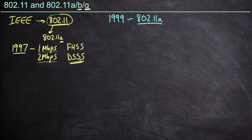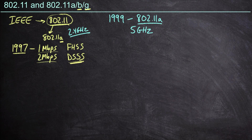802.11a was a significant step forward in technology. In fact, one might argue it was too big of a step. One of the biggest things it did was operate only in the 5 gigahertz space. Even back in 1997, 802.11 was a 2.4 gigahertz only technology, and the 2.4 gigahertz space was already crowded. So the idea was to get out of the 2.4 gigahertz space and jump into 5 gigahertz. However, this 5 gigahertz hardware was very expensive, and if the price isn't right, a technology is never going to get adopted.